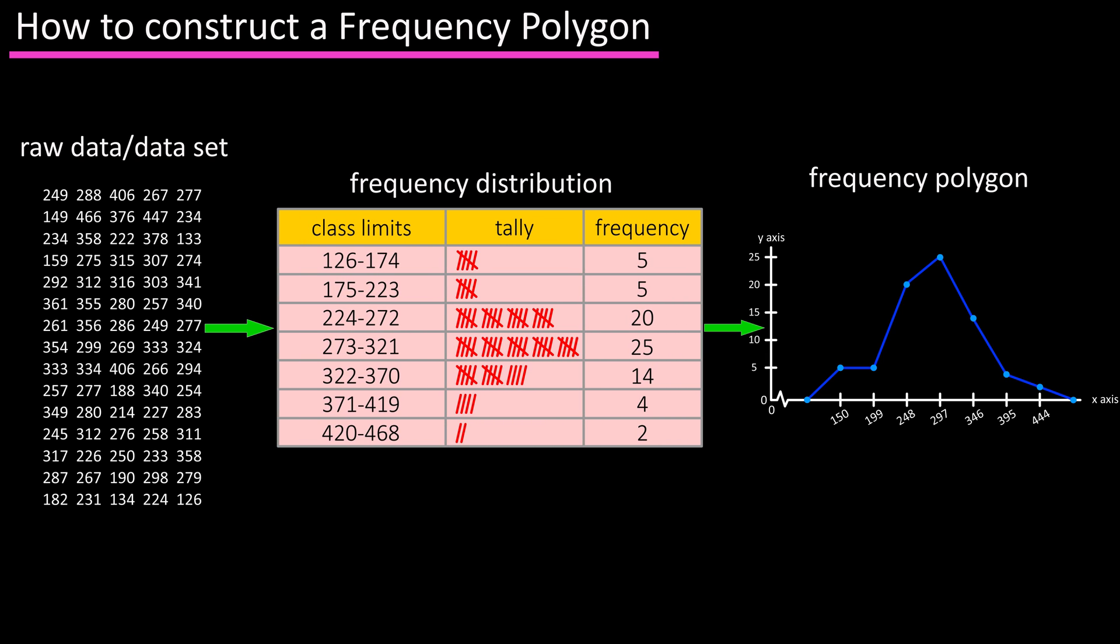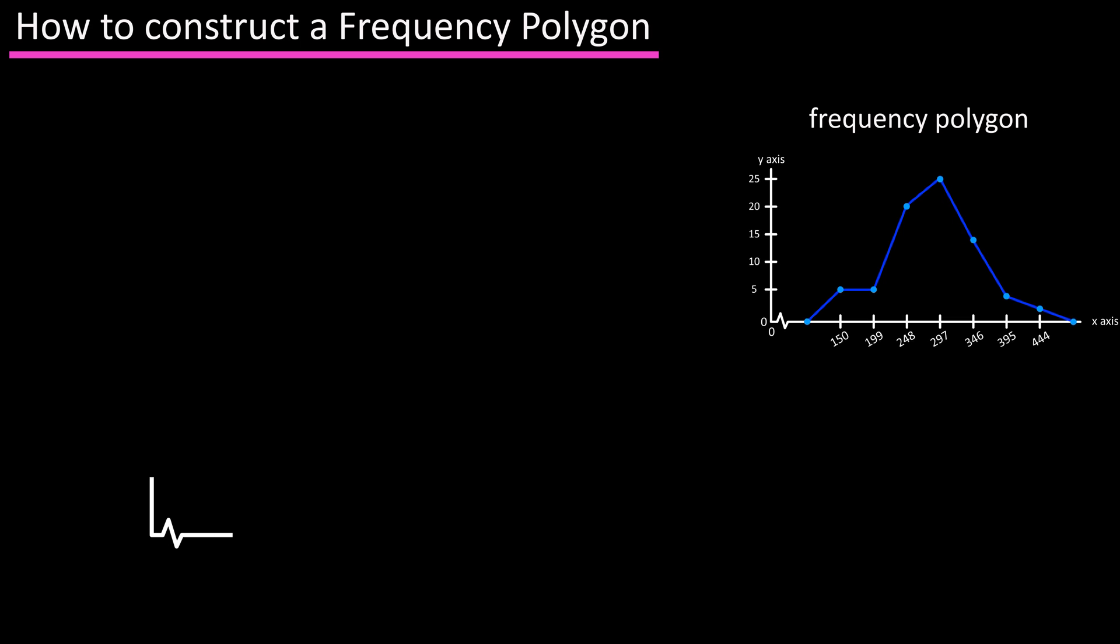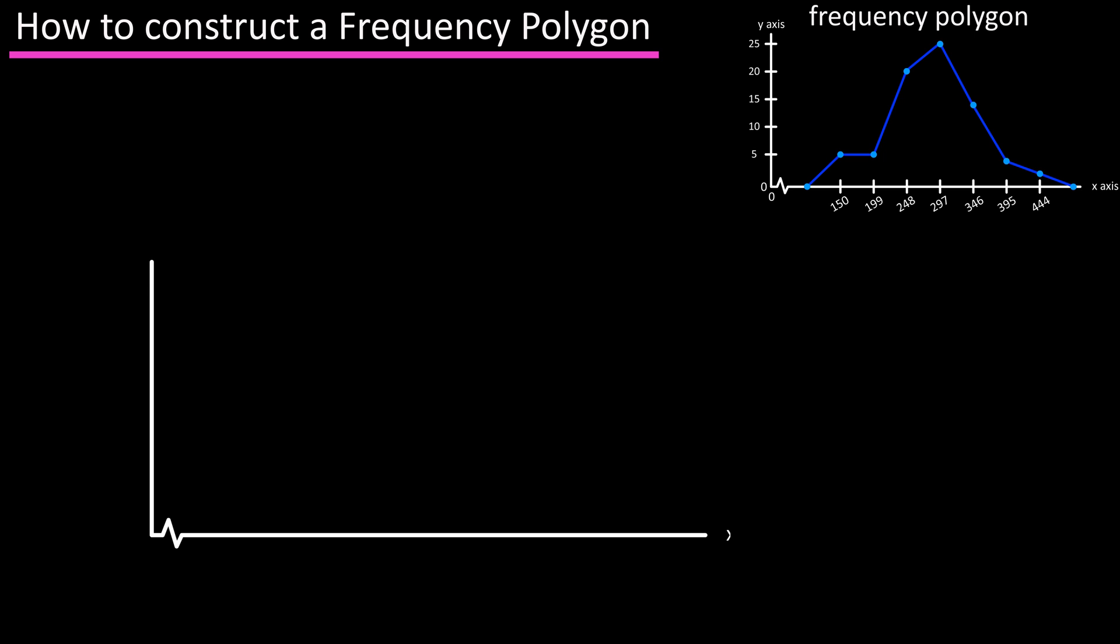Now we want to take the data that we organized and summarized in the frequency distribution table and show or display it in a graph form. So the first thing we're going to do is draw an x and y axis. For the x-axis I'm going to put this little squiggle in near the beginning of the line, and I'll explain this later in the video. Next we need to label the zeros, which is going to be where the x and y axes meet.